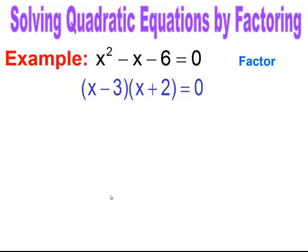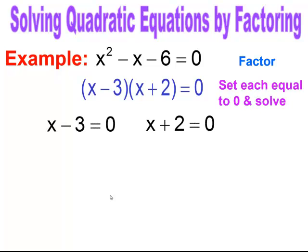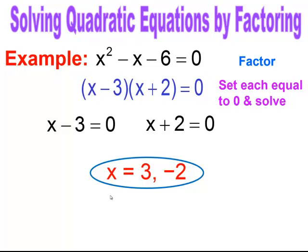Now I set each factor equal to zero and solve for x. For x minus 3 equals zero, I add 3 to both sides and get x equals 3. For x plus 2 equals zero, I subtract 2 from both sides and get x equals negative 2. So my solutions for this quadratic equation are x equals 3 and x equals negative 2.